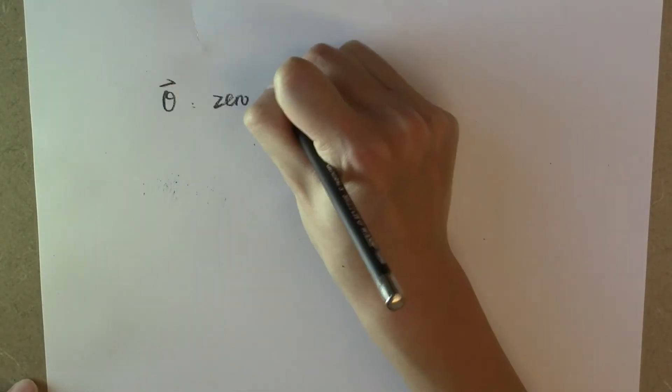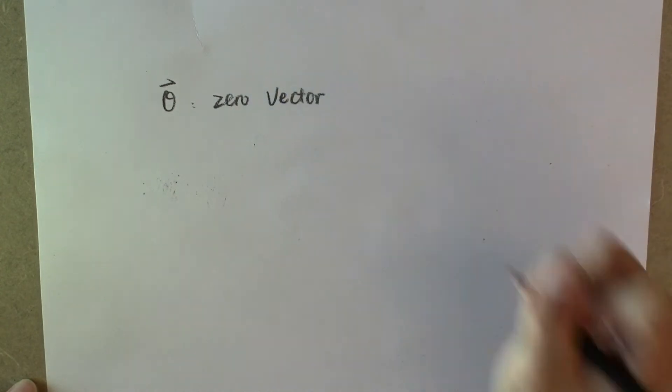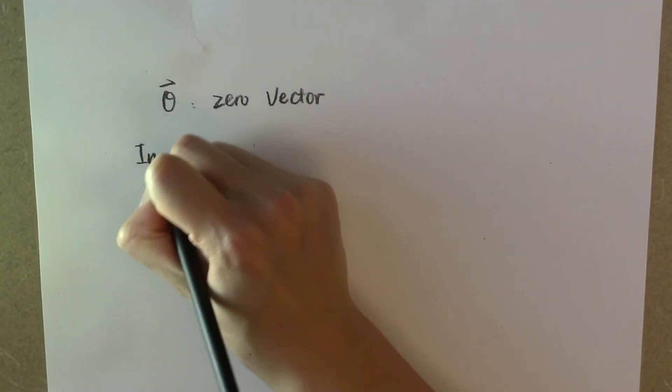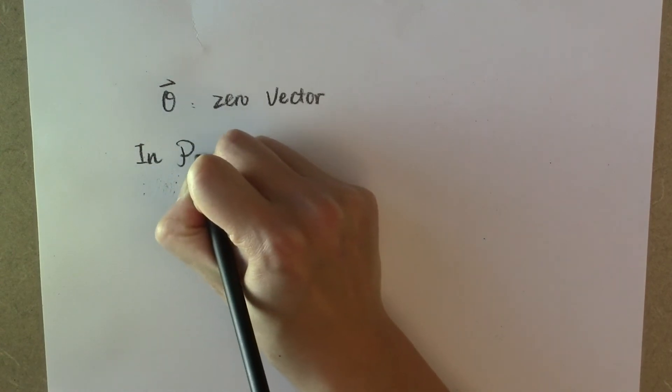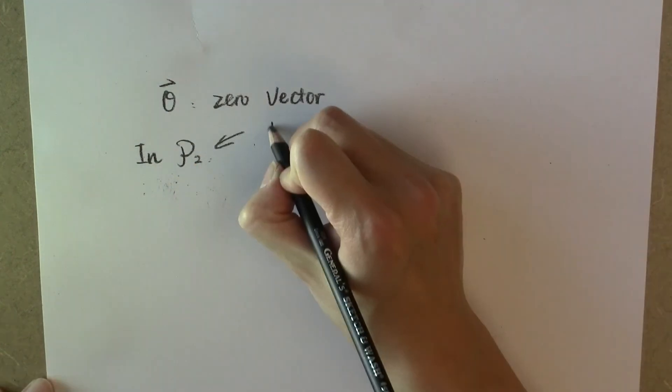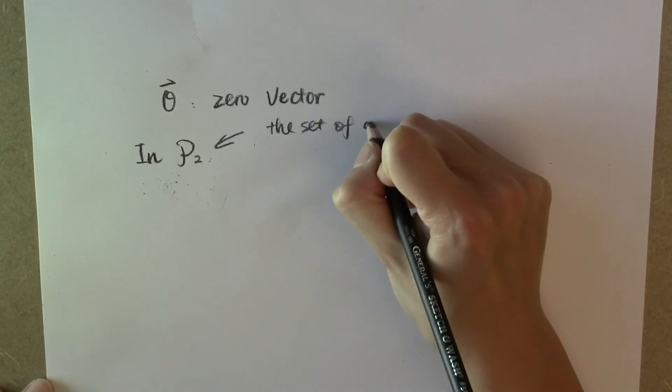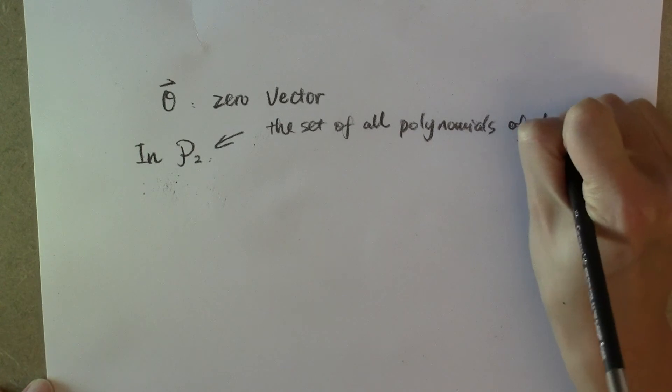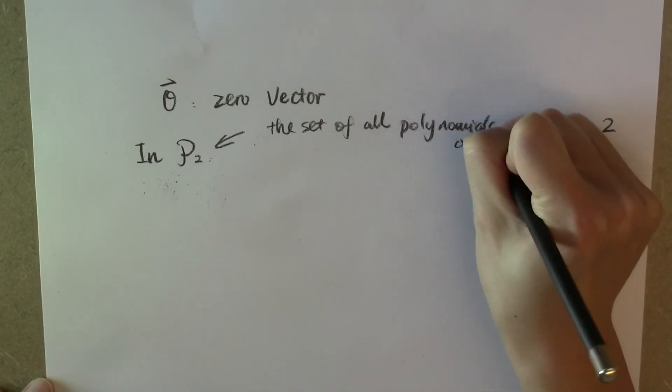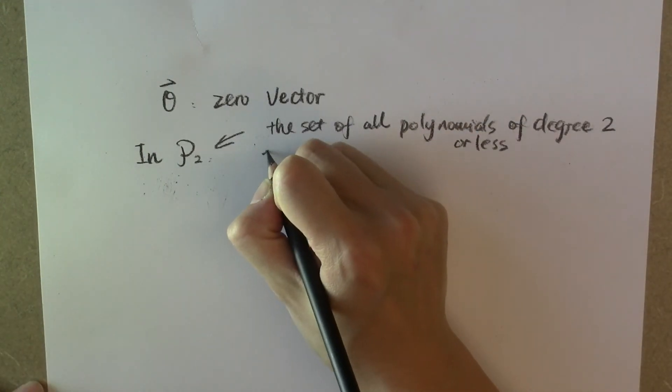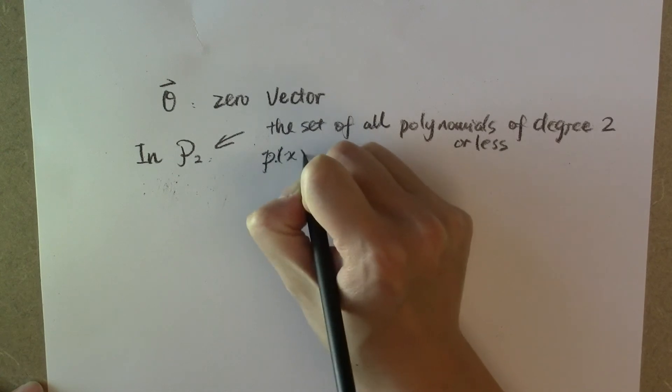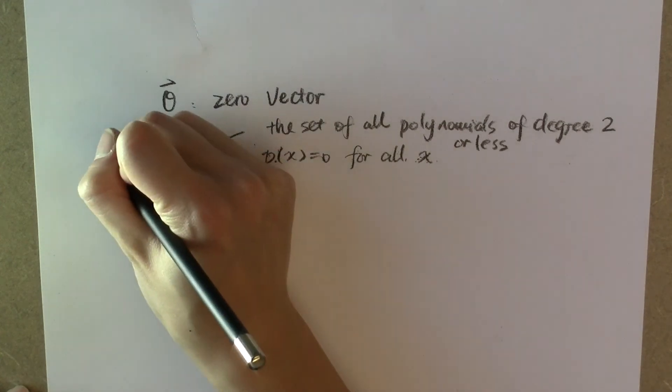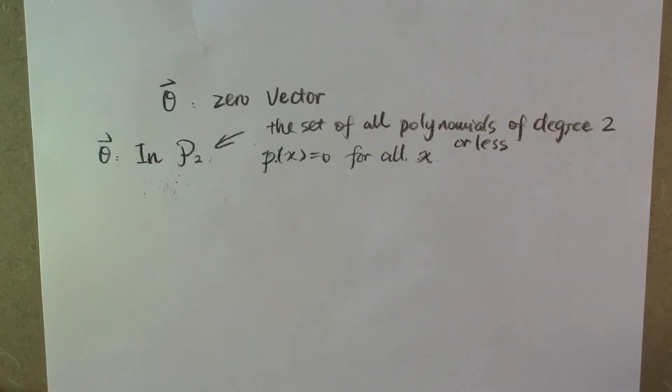It depends on the vector space; you might have different zero vectors. In the vector space P₂, which is the set of all polynomials of degree 2 or less, the zero vector is the polynomial that is zero for all values of x. This polynomial is the zero vector.